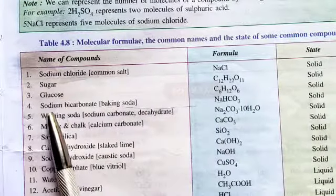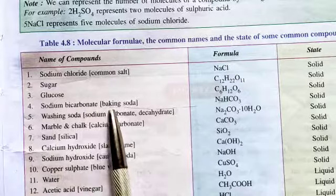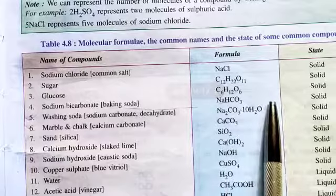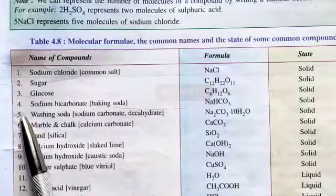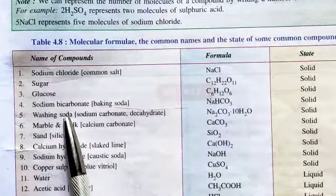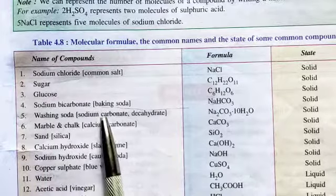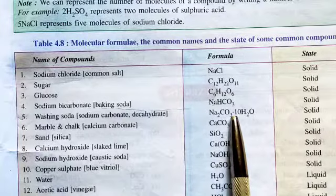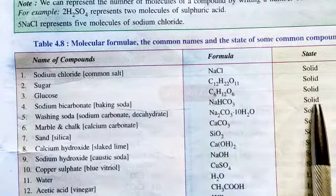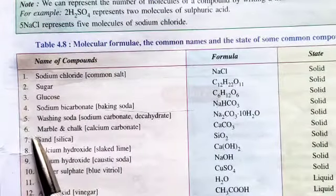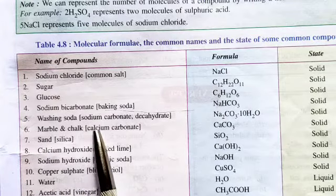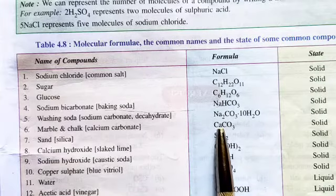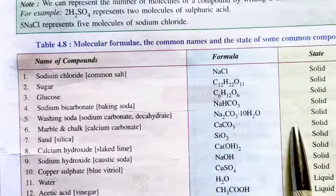4. Sodium bicarbonate, which is also called baking soda — its formula is NaHCO3 and its state is solid. 5. Washing soda, which is also called sodium carbonate decahydrate — its formula is Na2CO3·10H2O and its state is solid. 6. Marble and chalk, also known as calcium carbonate — its formula is CaCO3 and its state is solid.